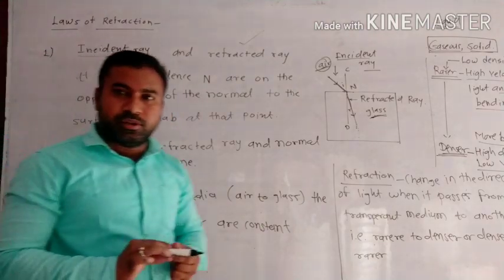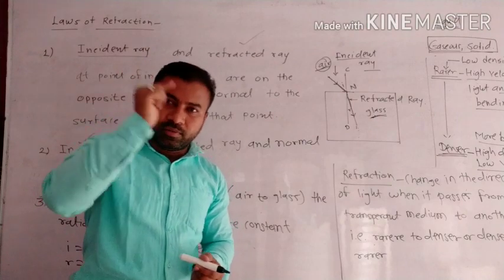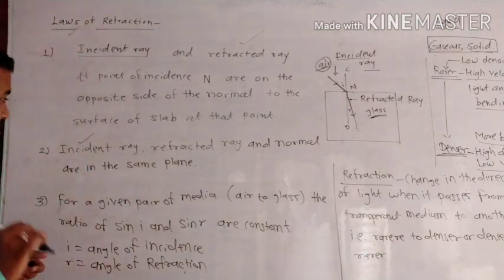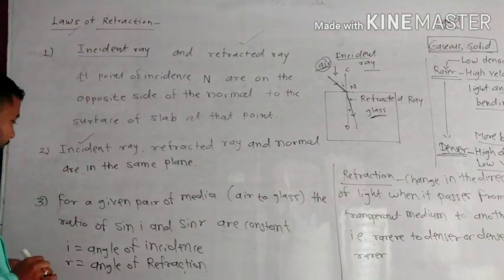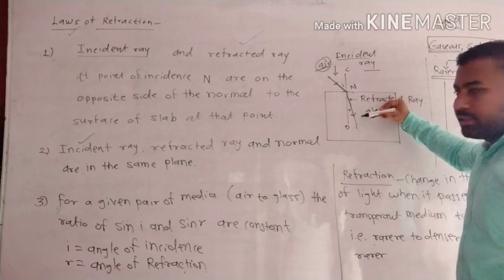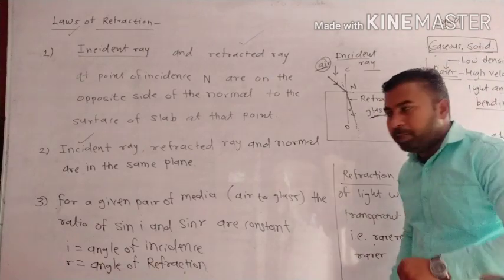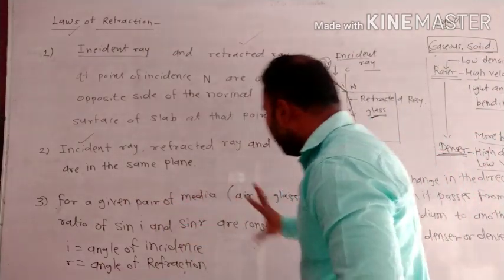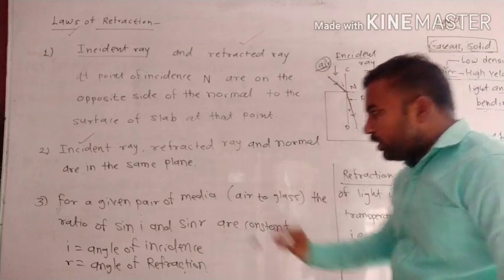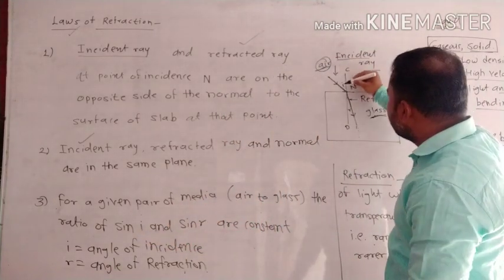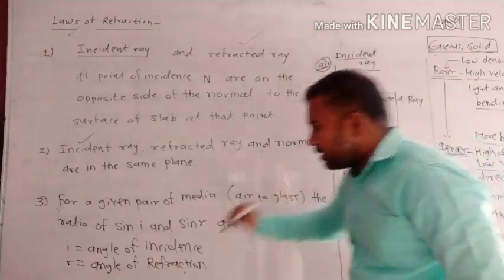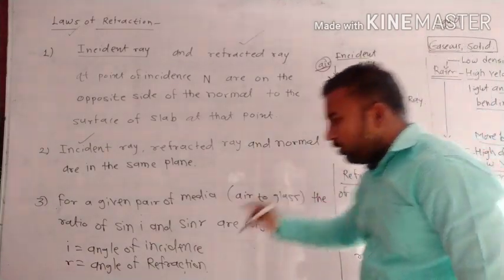Third law is a different and important law compared to the laws of reflection. For a given pair of media — for example, air and glass — when we send light from air to glass, then the ratio of sine i to sine r is considered. Here, sine i is the sine of the angle of incidence, and r is the angle of refraction.